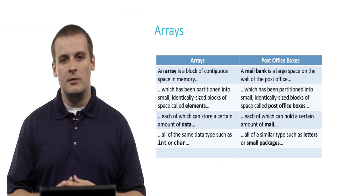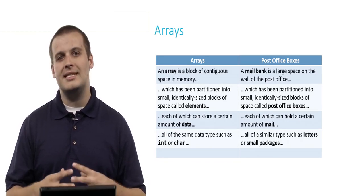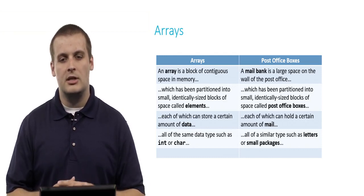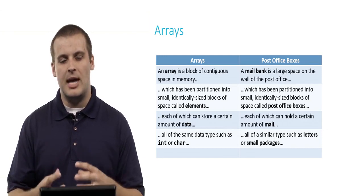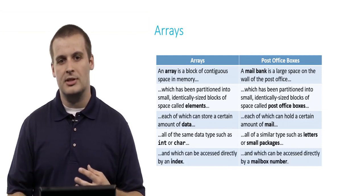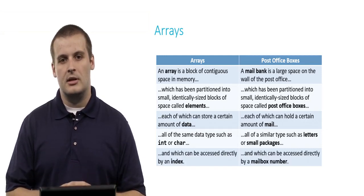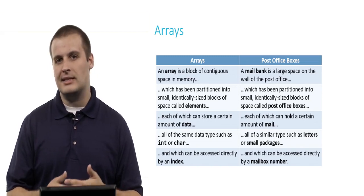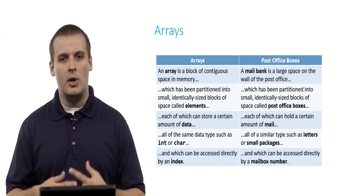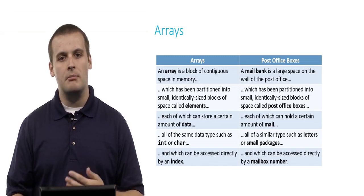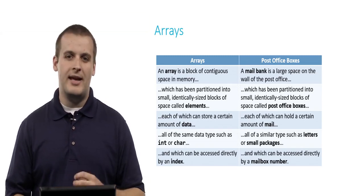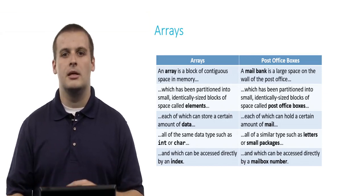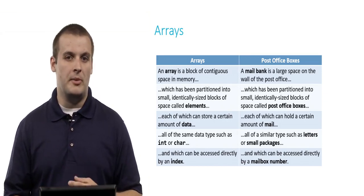What can be stored in each element of the array? It's variables of the same data type, such as int or char. Just like in your post office box, you can only fit things of a similar type, such as letters or small packages. Lastly, we can access each element of the array directly by index number, just as we can access our post office box by knowing its mailbox number. Hopefully that analogy helps you get your head around arrays.